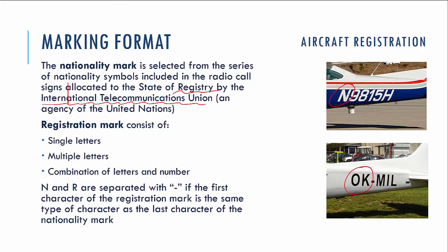The registration marking consists of a single letter, multiple letters, or combinations of letters and numbers. In the example, the letters or numbers after the nationality marking form the registration mark of the aircraft — for instance, 'Mike India Lima' is the registration mark. In some cases, when the last symbol of the nationality mark and the first symbol of the registration mark are of the same type, they should be separated by a dash. But when they are different types, the dash is not required.